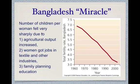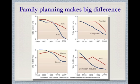This is due to three things: agricultural output had to increase so that not everyone is needed on a subsistence farm. Once there's a surplus, people can move and get jobs off the farm — women especially got jobs in textiles and other industries in Bangladesh. The third factor credited with the Bangladesh miracle is highly effective family planning education, which lowered the growth rate significantly.